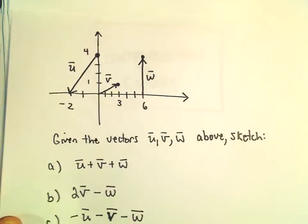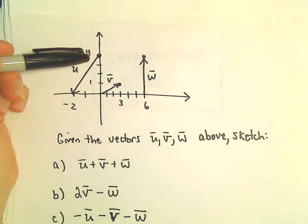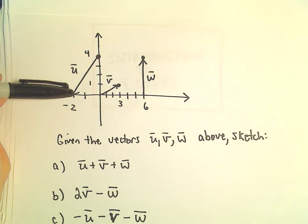Alright, in this example, we're going to be given three different vectors here. So we've got vector u that starts at the point (0,4) and stops at the point (-2,0).